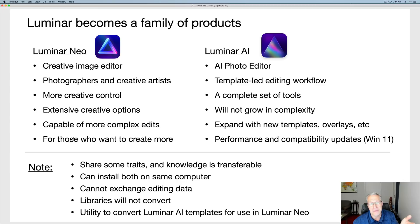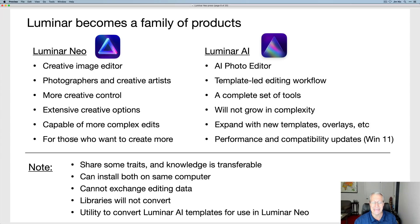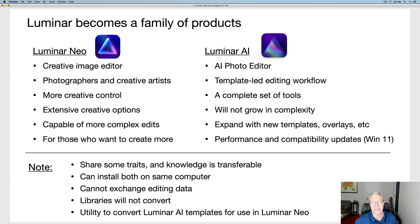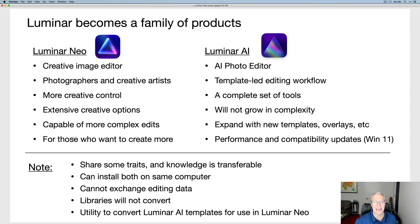Honestly, this is what we've been asking for since Luminar 4 — better tools, more powerful tools, but with layers. Now we're getting it. The family of products shares some traits, and knowledge is transferable. You can install both on the same computer, but they don't exchange image editing data and the library does not convert from AI to Neo. Luminar AI is not going away, so your photos will still be there safe and sound. They're also providing a utility to help you convert Luminar AI templates over for use in Luminar Neo, which I think is great.